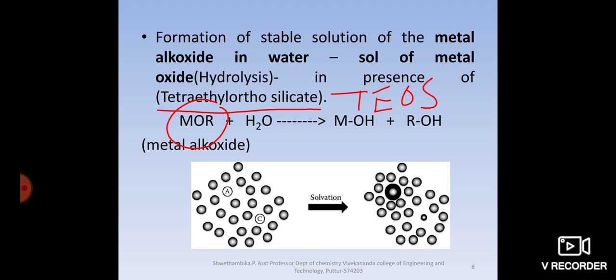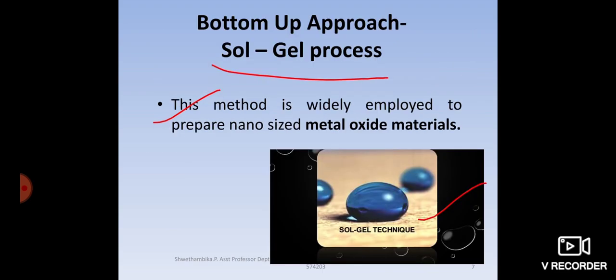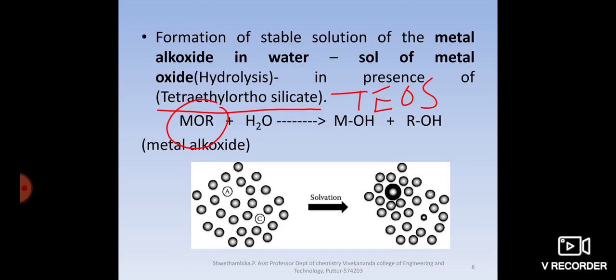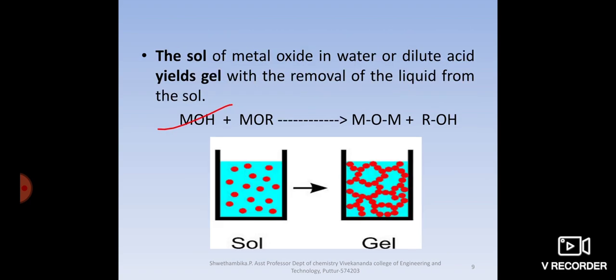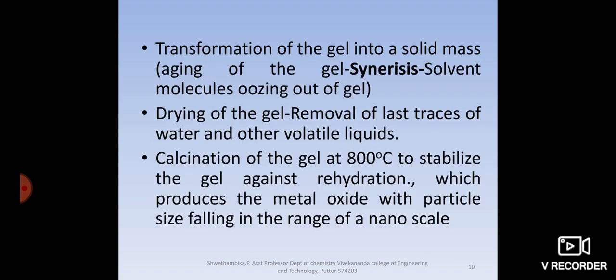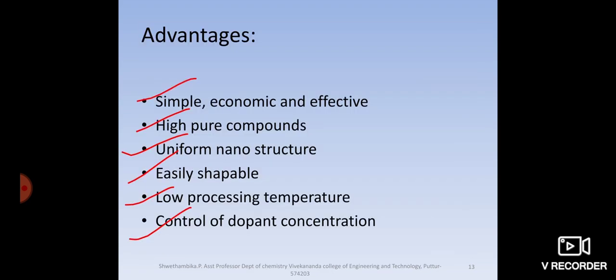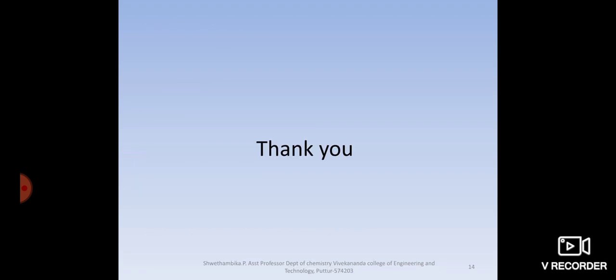Now let us quickly once go through the Sol-Gel process. Here one point you remember, that is method used for synthesis of metal oxide material. First step formation of sol, second step formation of gel. Hydrolysis and condensation, two reactions. Then syneresis, drying and calcination. Then some advantages of the method. In the next session we will see the synthesis of nanoparticle by chemical vapor deposition method. Thank you.